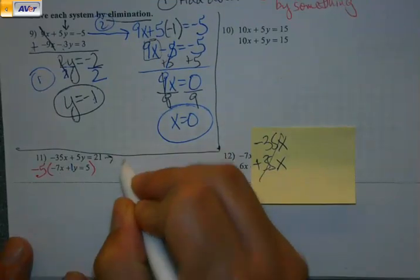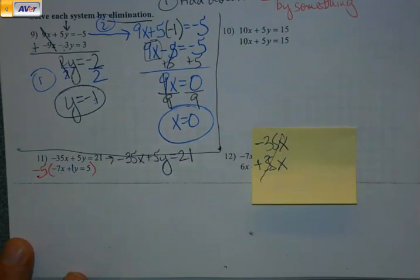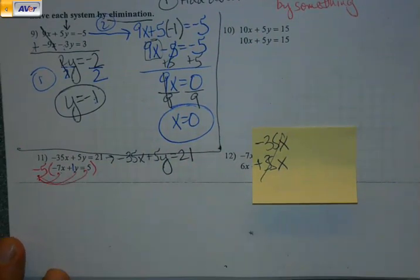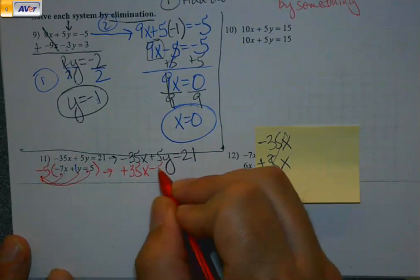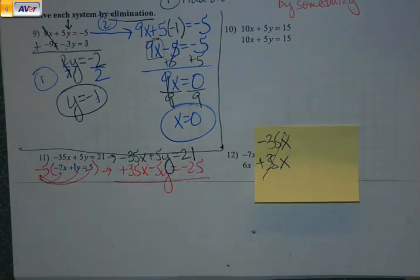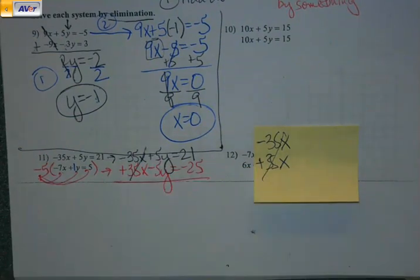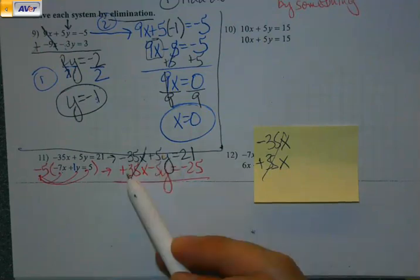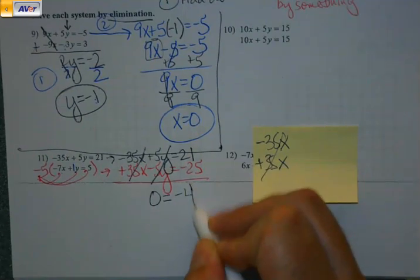We're going to multiply this bottom equation by negative 5 to get my desired outcome. I leave the top equation alone. But my bottom equation, we're going to multiply all three parts of it by negative 5. The goal here is that that variable that I wanted to get rid of is gone. Negative 35 plus 35, the x's are gone. But then weird happens. Positive 5 plus negative 5. The y's went away too. That's not necessarily good.